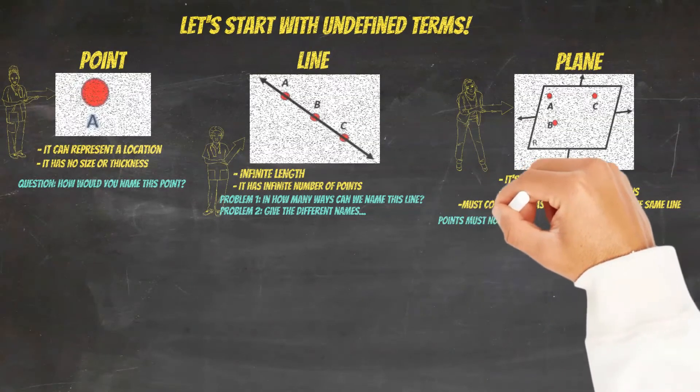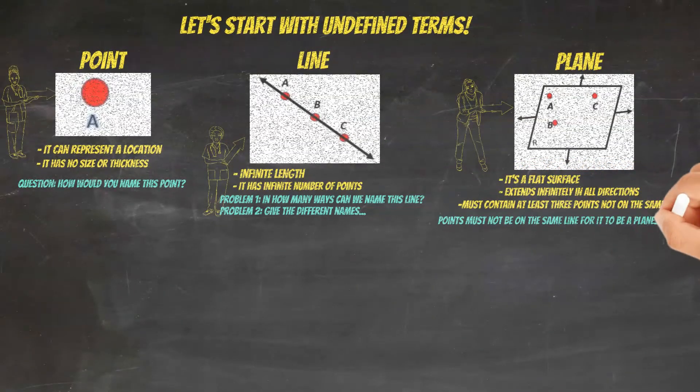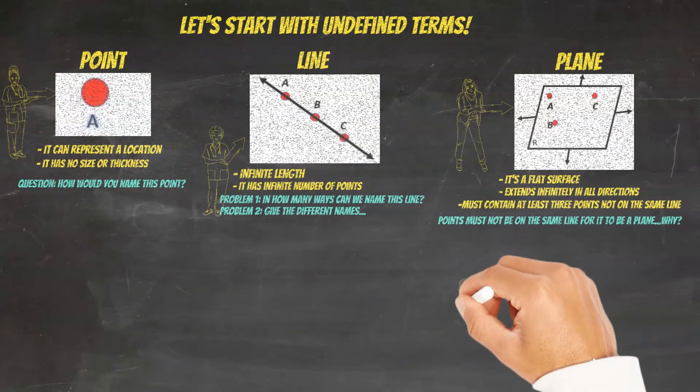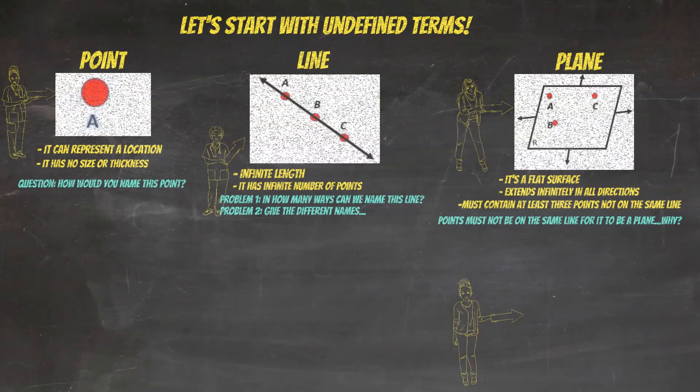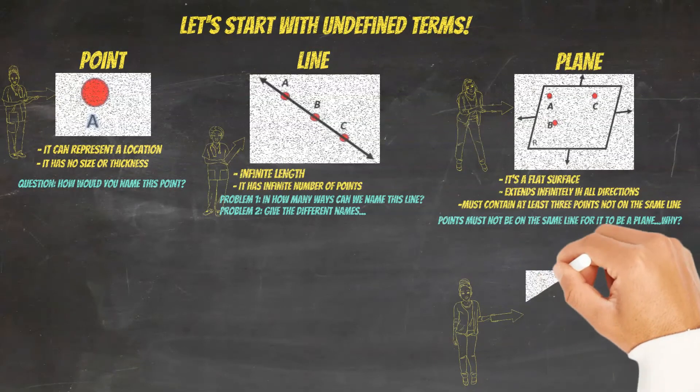And these points cannot be on the same line. So the question here is, why can these three points not be on the same line? Let me help you get a little bit more understanding here.